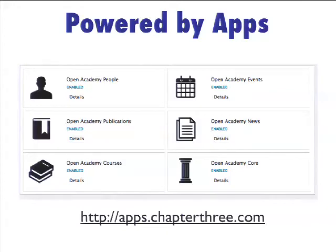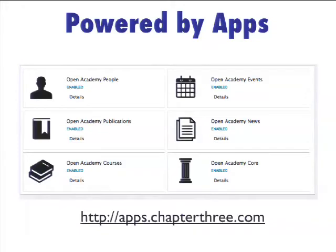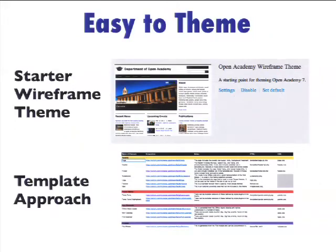These features are all done as apps — an extension on top of Features that specifically works with a remote app server. That app server serves your updates and allows you to use the Drupal core update manager to download them. When you go through the Open Academy install, you actually pick which things you want — the news thing, the events thing. And when something new pops up, you go to your dashboard and it says 'there's a new FAQ app, you can install it.' So you get layering: Panopoly apps, Open Academy apps, and then your university-specific apps, like Berkeley's authentication module.